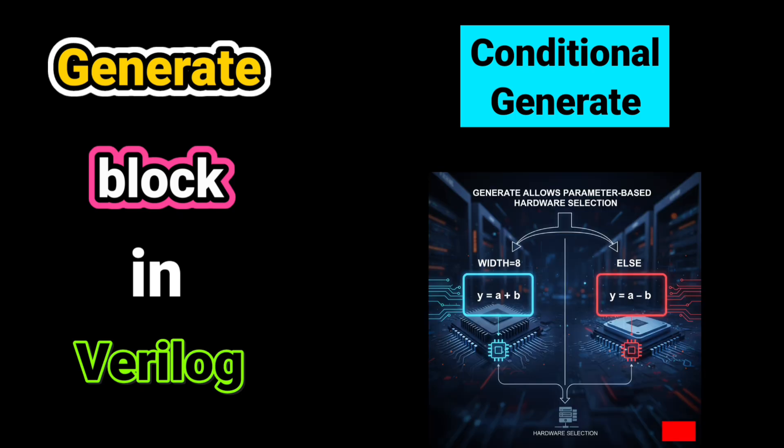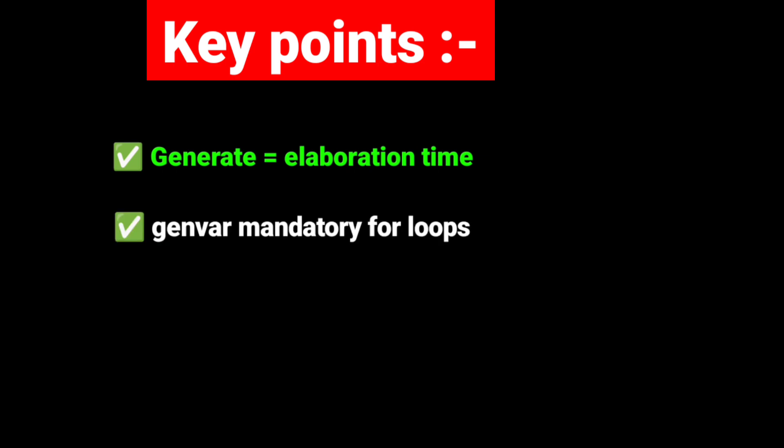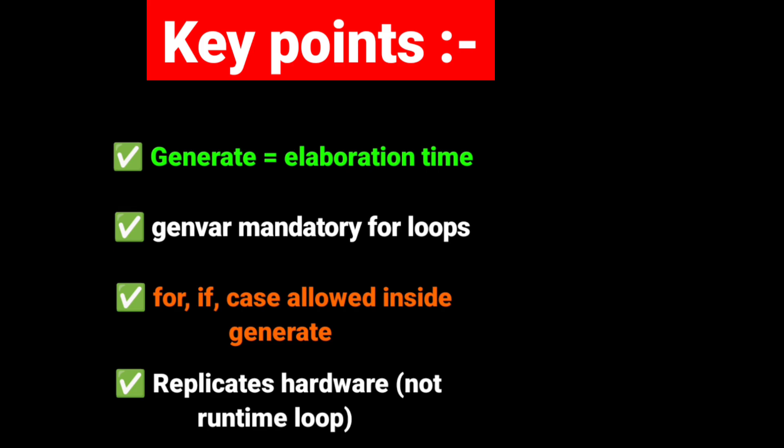Conditional generate: Here, based on parameter width, the tool selects which hardware to build. Key points to remember: Generate executes at elaboration time, not during runtime. GenVar is mandatory for loops inside generate. Case, if, and for can all be used inside generate. Generate blocks are for hardware replication, not like software loops.